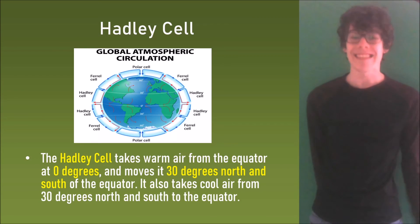The Hadley cell takes warm air from the equator at zero degrees and moves it 30 degrees north and south of the equator. It also takes cool air from 30 degrees north and south to the equator.